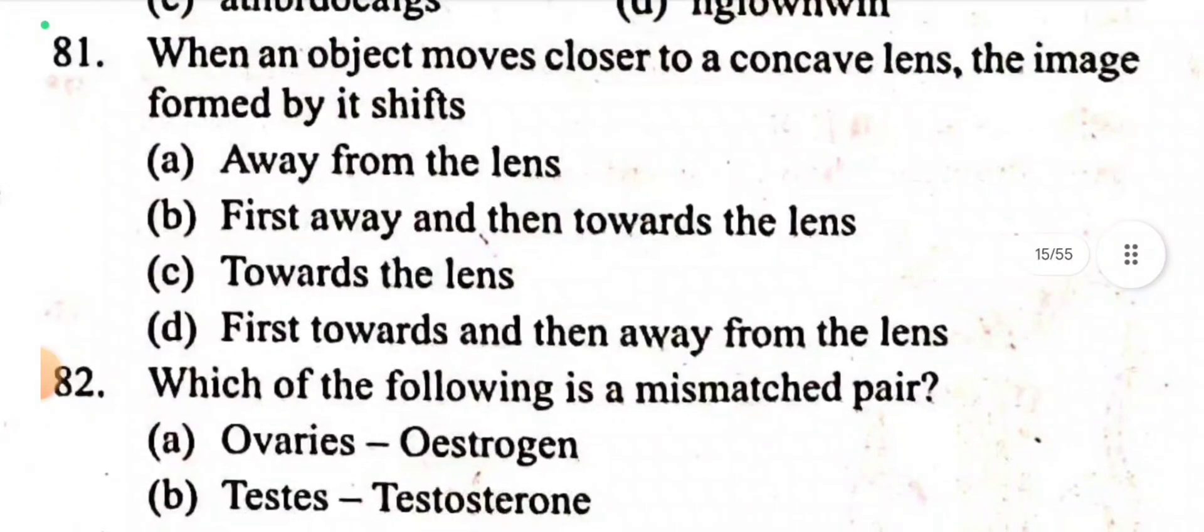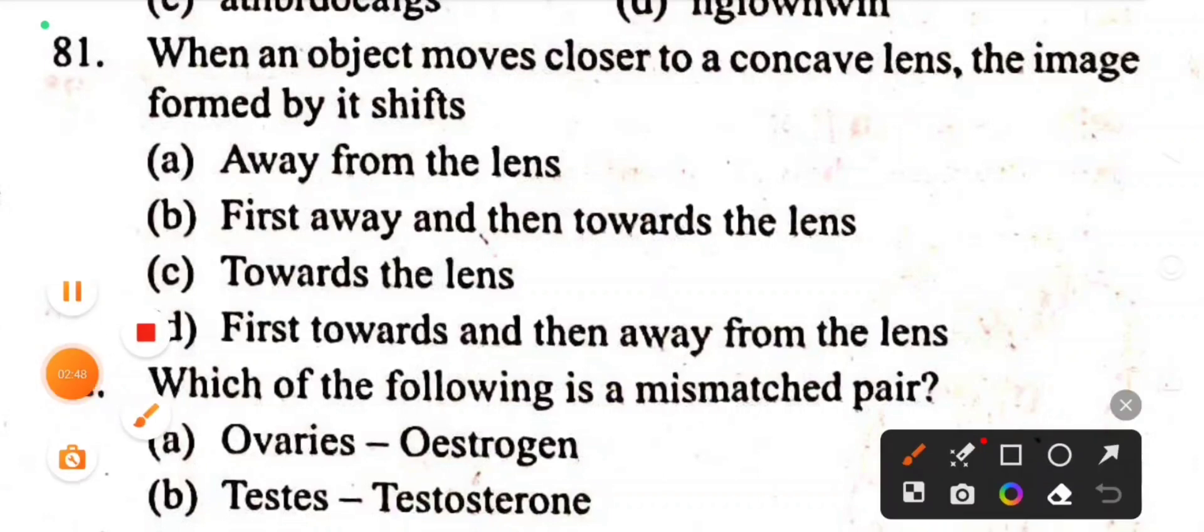Question 81: When an object moves closer to a concave lens, the image formed by it shifts away from the lens.